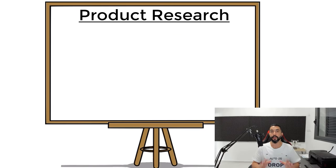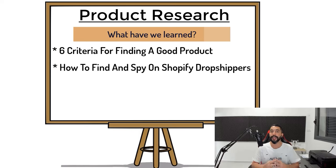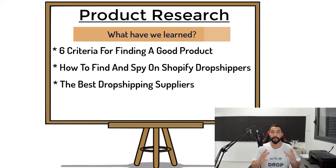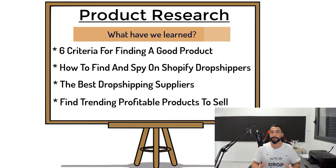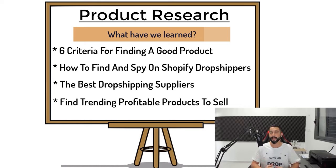In the previous product-finding videos, we learned about the six criteria for finding a good product to sell, how to find successful Shopify dropshipping stores, and the best dropshipping suppliers to work with. Now this video is going to be an exciting one — how to find the best and most profitable dropshipping products to sell on our stores that are trending today, products that don't have a lot of competition and have a high profit margin. One way is by seeing what's working well for other people with Shopify dropshipping stores. Another way is by seeing what's going well on the market without researching specific Shopify stores, to get the best trending products that are selling today.